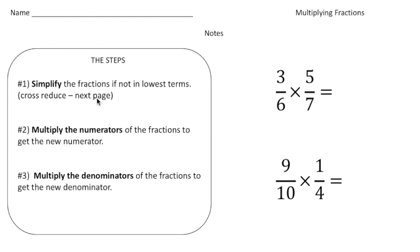I've come up with a three step process on how to multiply fractions. Step number one is if you can, simplify the fractions to make sure that they're in lowest terms. For example, here we have 3/6 times 5/7. I know 3/6 I can reduce down to 1/2, so I'm going to change that to 1/2. That's step number one.